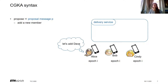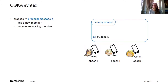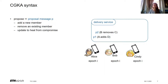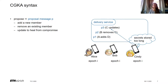For example, Alice can propose to add a new member Dave — she sends a proposal message P1. The next type is to remove someone: Bob posts P2 to remove Cindy. The final type is an update: if Cindy has been storing her keys for too long, she wants to refresh her secrets and sends update proposal P3. These proposals do not create a new epoch.